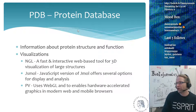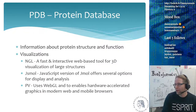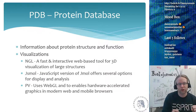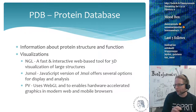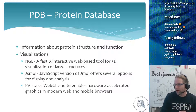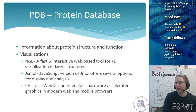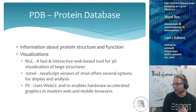The PDB — Protein Data Bank — contains information about protein structure and function, and provides several visualizations. The three main visualization tools are NGL, a fast and interactive web-based tool; JSmol, a JavaScript version; and PV, which uses WebGL for hardware-accelerated graphics in modern web and mobile browsers. The PDB's main focus is on protein structure — if you want to see how the SARS-CoV-2 spike protein looks, you can use the PDB. It also allows predictions — for example, what happens structurally if five molecules are deleted from the spike protein.